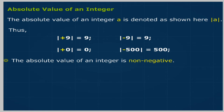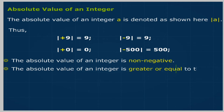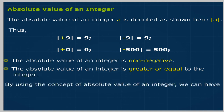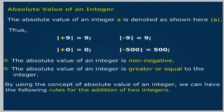The absolute value of an integer is non-negative. The absolute value of an integer is greater than or equal to the integer. By using the concept of absolute value of an integer, we can have the following rules for the addition of two integers.